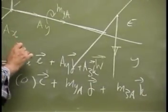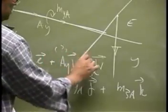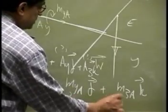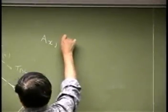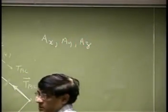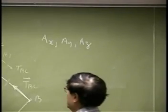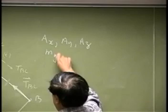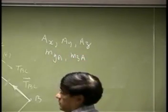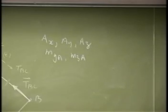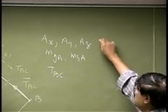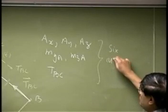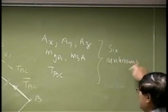And if you look at the unknowns, this is an unknown, that's an unknown, that's an unknown, that's an unknown, that's an unknown, and this is an unknown. So the actual count: if I count the unknowns, you'll have Ax, Ay, Az — those are the x, y, z components of the reaction at point A. Then you have MyA and MzA — those are the unknown couples or the components of the unknown couple. Then you also have the unknown TBC. So these are six unknowns of the problem.